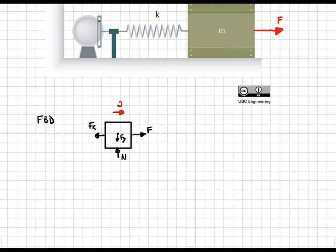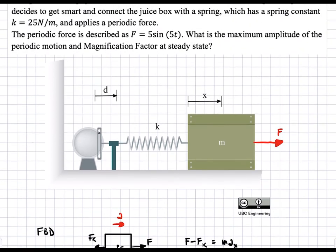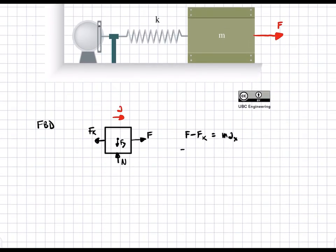If we take the sum of forces in the x direction, we get F minus Fk equal to Ma. And this is Ax. If we write this in terms of what the values actually are, we can plug in F is equal to 5 sine of 5t, and then we have minus Fk, which is equal to kx, and then we have mAx, which is also equal to mx double dot.